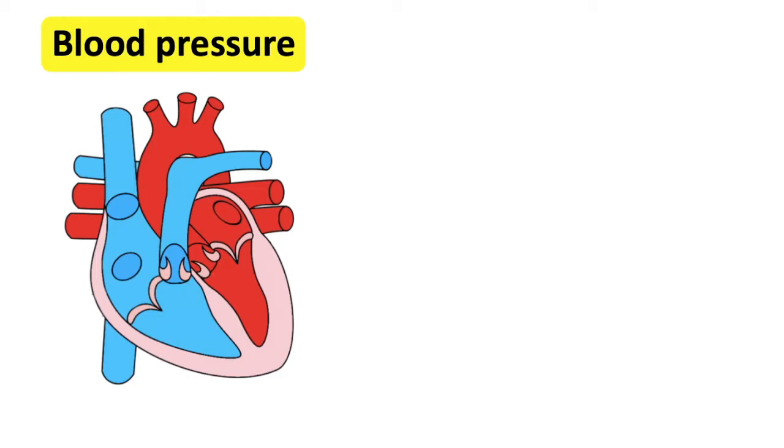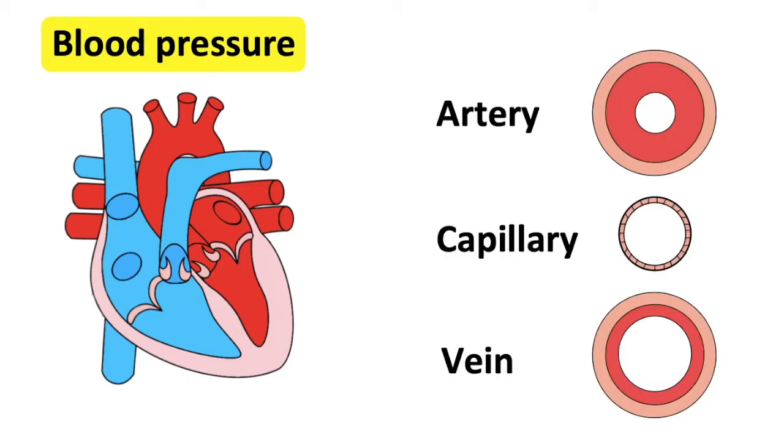Blood also helps to get rid of waste and carbon dioxide from the body as well as fighting infections. Blood is transported around the body via blood vessels. As the blood is transported through the blood vessels, it exerts a force on the walls of the vessels.